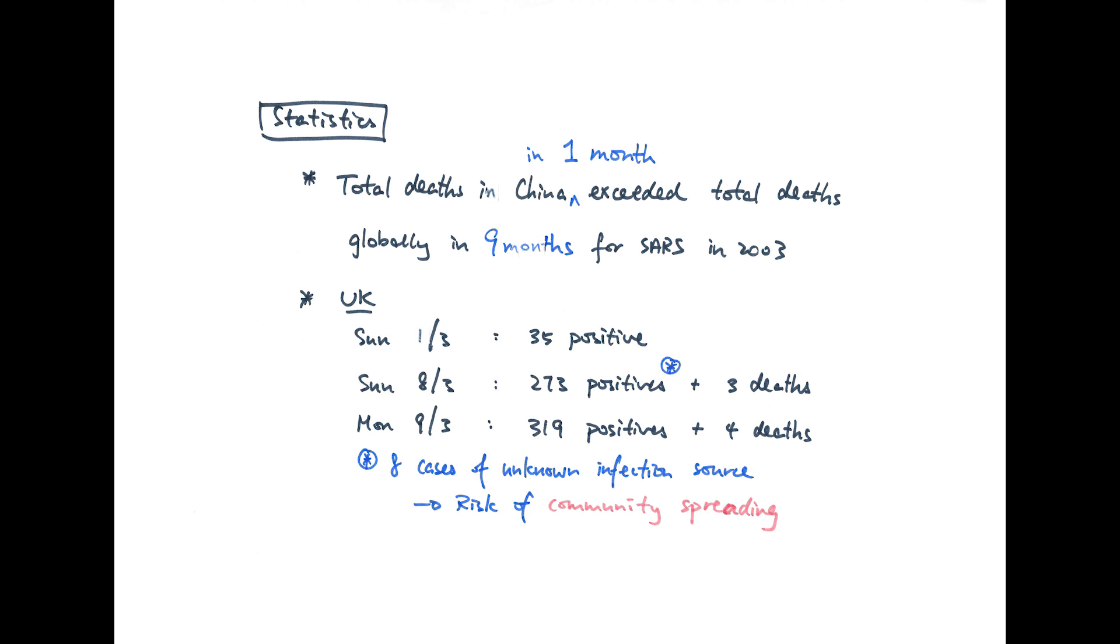On the 1st of March, which was last Sunday, there were 35 confirmed cases in the UK. A week later, which was 8th of March, there were 273 confirmed cases plus 3 deaths.